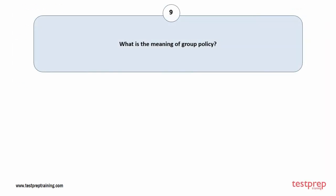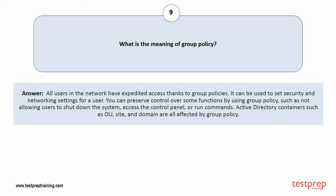Question number 9: What is the meaning of group policy? All users in the network have expedited access thanks to group policies. It can be used to set security and networking settings for a user. You can preserve control over some functions by using group policy, such as not allowing users to shut down the system, access the control panel, or run commands. Active Directory containers such as OU, site, and domain are all affected by group policy.